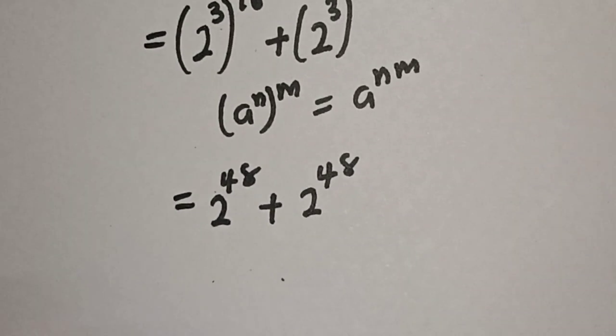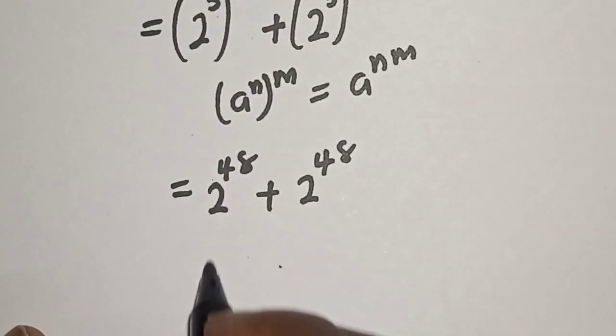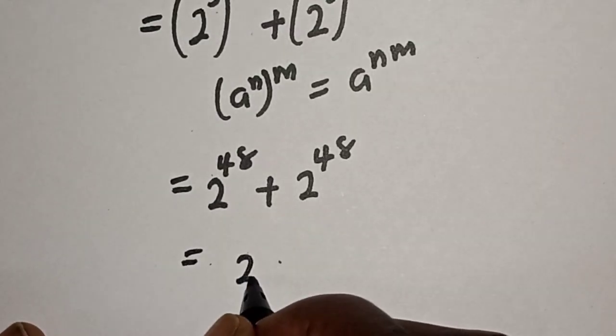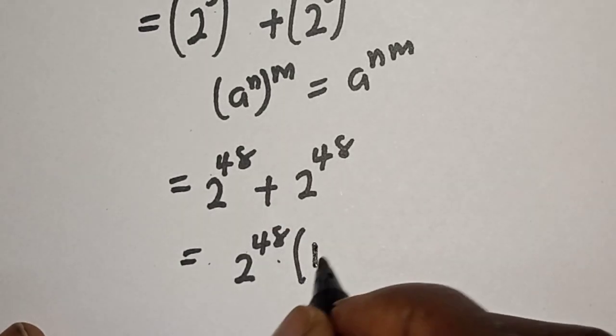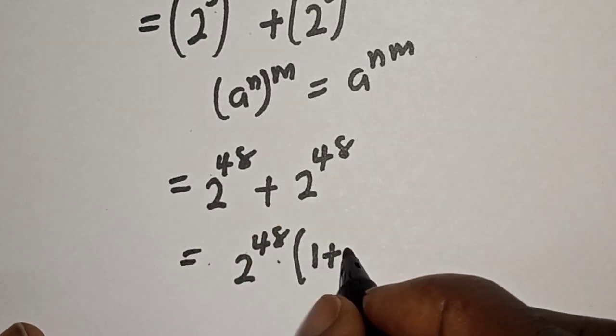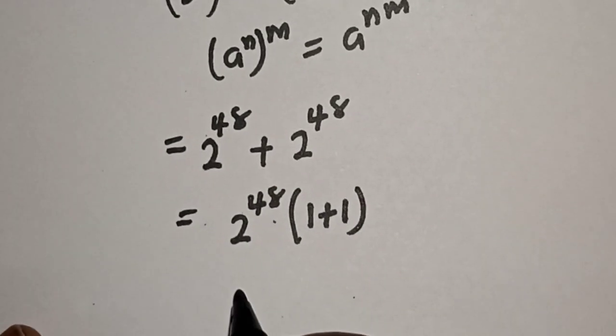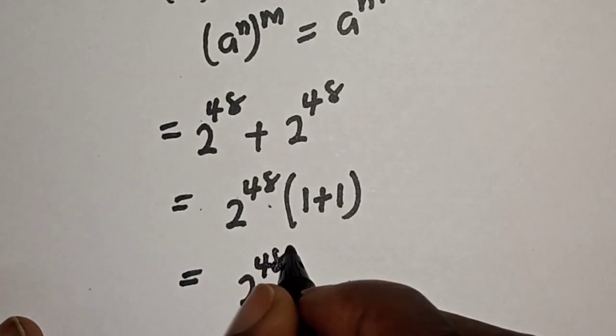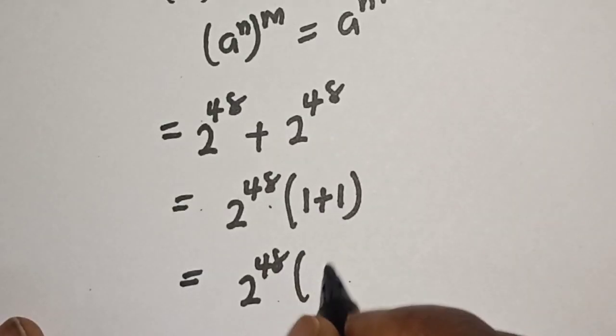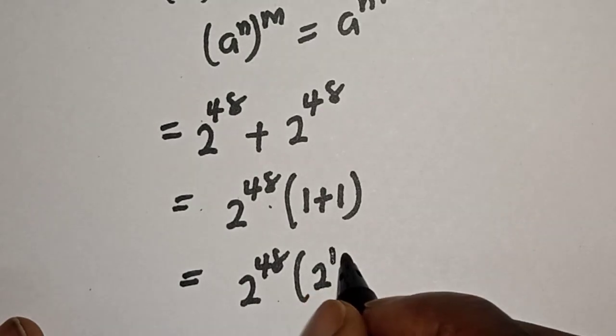Then let's see, 2 raised to power 48 is common. We have 2 raised to power 48 in brackets: this divided by this is 1 plus this divided by this is 1. This is equal to 2 raised to power 48 bracket 1 plus 1, which is 2, and this is also 2 raised to power 1.